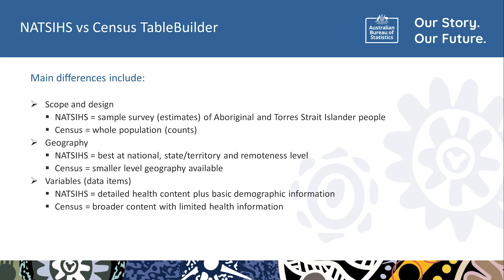There is also a difference in the level of geography at which data from these collections are available. The NATSIS was designed to produce reliable estimates for the whole of Australia, for each state and territory, and for remoteness areas. The sample for the 2018-19 NATSIS was designed to achieve a relative standard error of less than 25% for key variables. Some lower-level geographies are available, but they are limited. In the Census, data for small geographic areas are available, assuming satisfactory response rates were achieved.